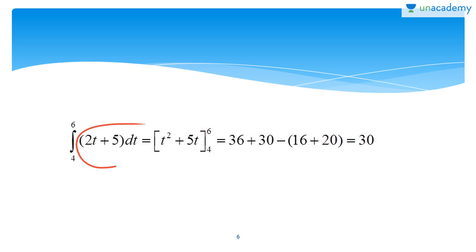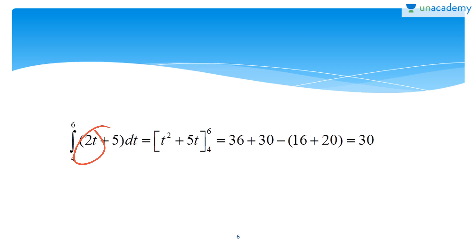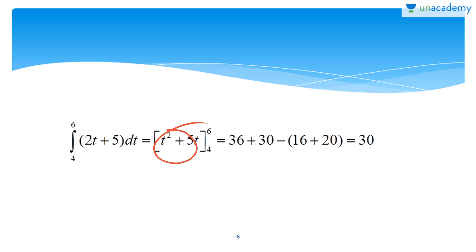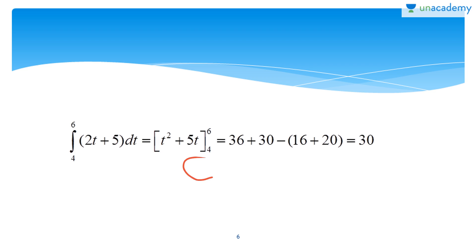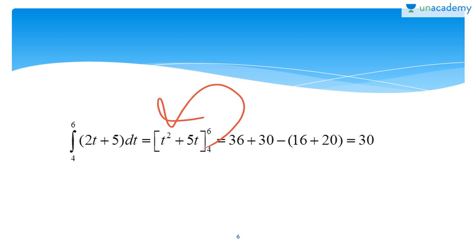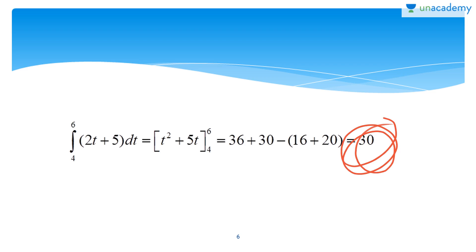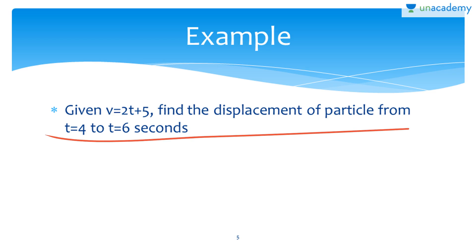Whenever area under a graph is mentioned, integration should come to mind. Integrate (2t + 5) dt from 4 to 6. Integrate each term separately: for 2t you get t^2, and for 5 you get 5t. The constant C is not needed because it cancels when you subtract the lower from upper limit. Substitute 6 and 4 into (t^2 + 5t) and subtract to get the displacement.